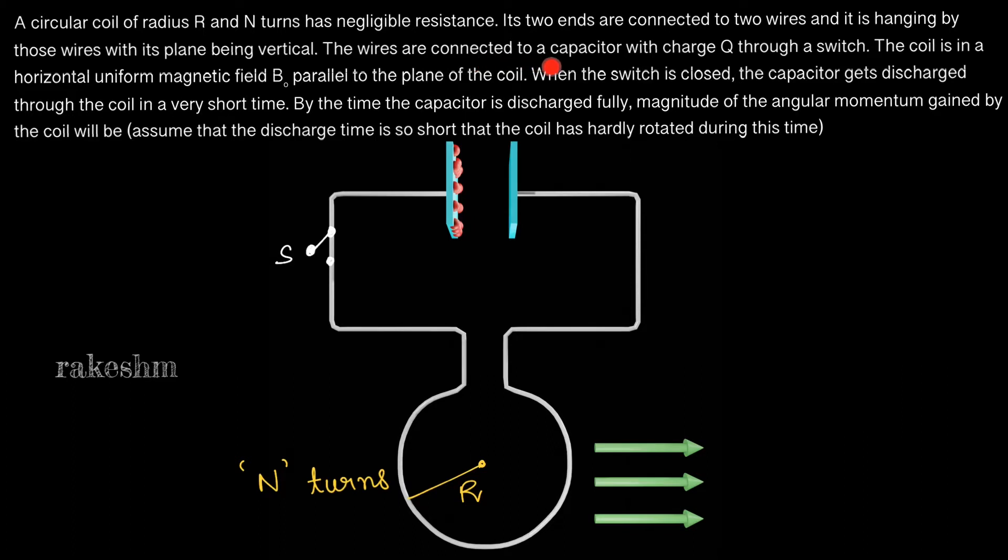The wires are connected to a capacitor with charge Q through a switch. The coil is in a horizontal uniform magnetic field B₀ parallel to the plane of the coil. So there is a horizontal magnetic field B₀ here, parallel to the plane of the coil.